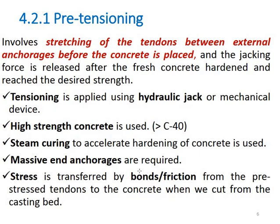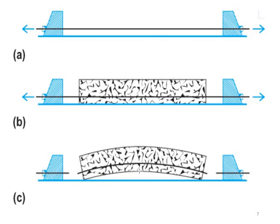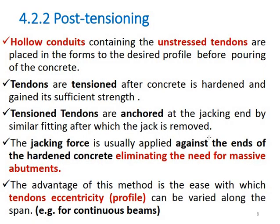Pre-tensioning involves stretching of the tendons between external anchorages before the concrete is placed and jacking with the forces applied. After the concrete is cast and hardened, the tendons are anchored. Post-tensioning involves casting the concrete first, and the tendons are tensioned afterwards using a conduit or duct.